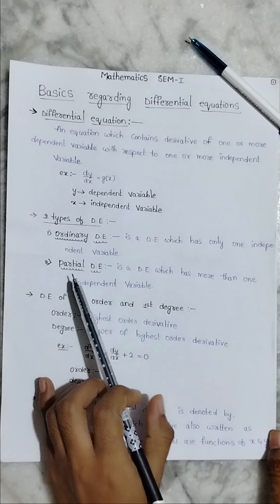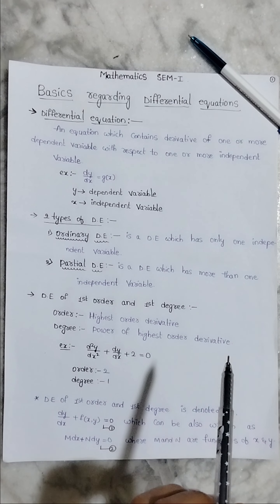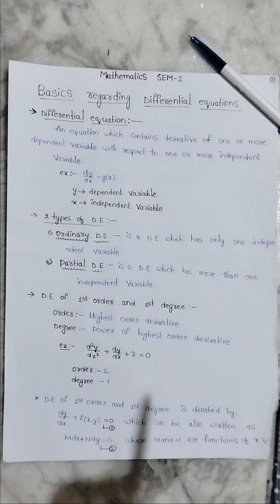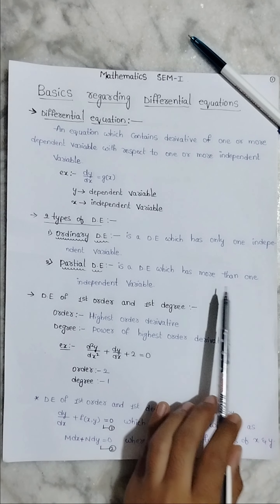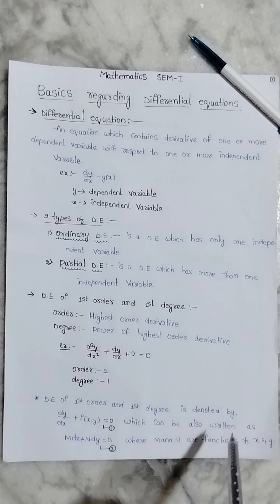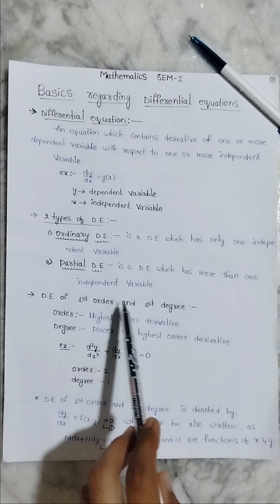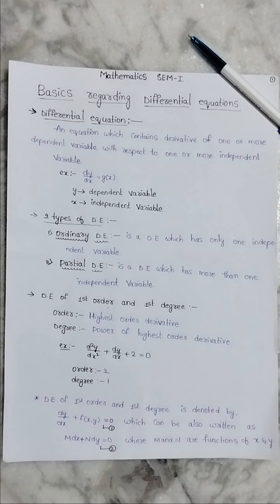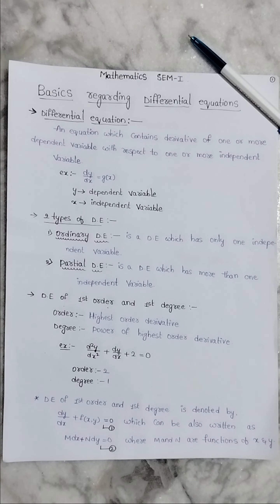Ordinary differential equation and partial differential equation. An ordinary differential equation involves one or more independent variables. I will show you the example.